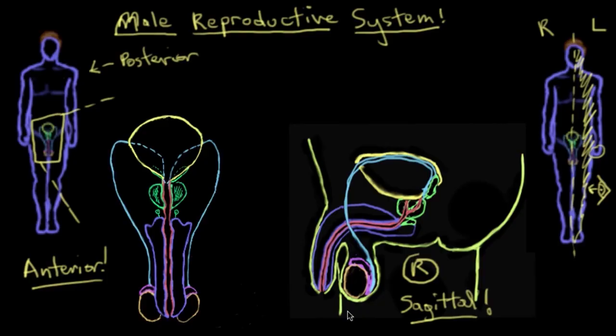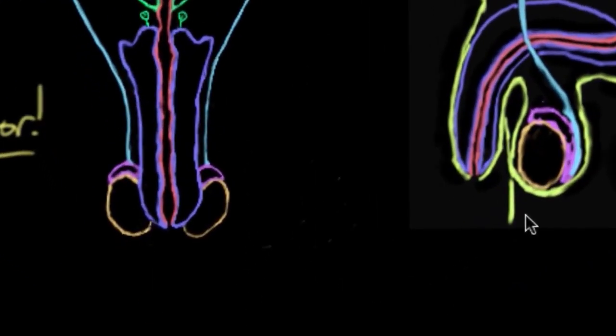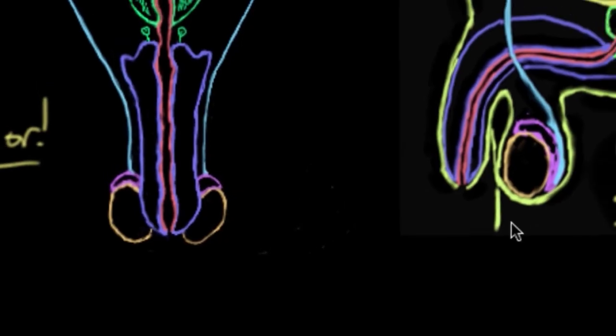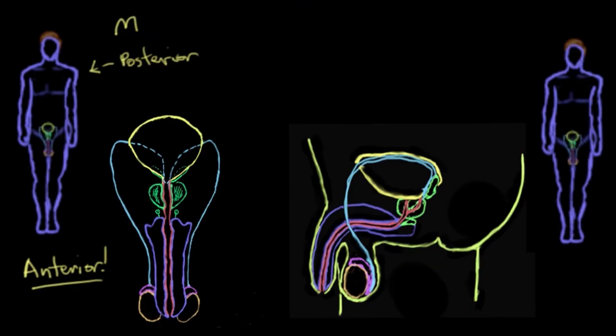It's also important to mention that most of what you see here is actually contained within the body, so you don't actually see that when you look from the outside. What you do see is just the penis and the scrotum that contains the testes. Now that we've taken a look at the two different views, let's clear away some of this stuff and meet the organs.